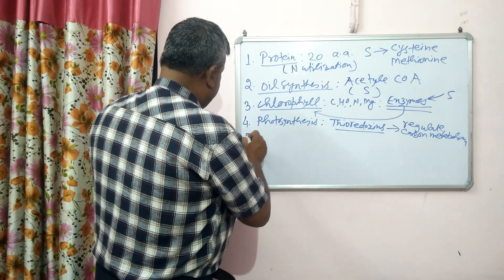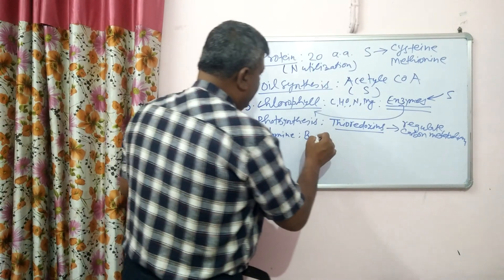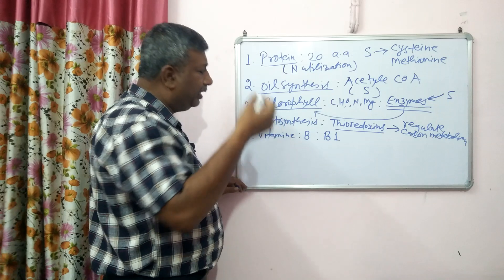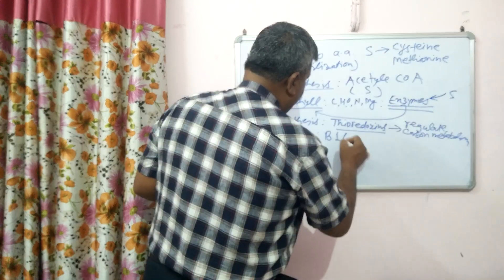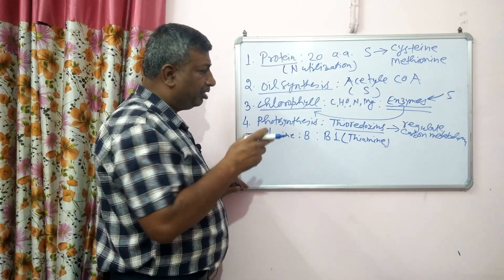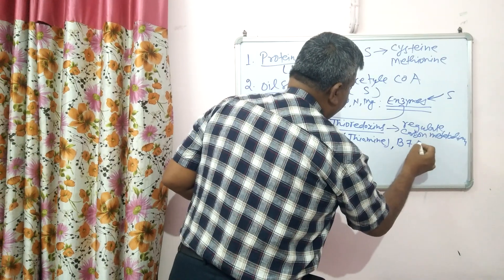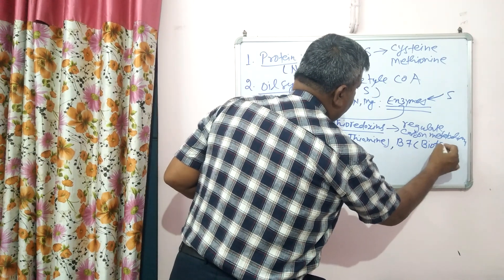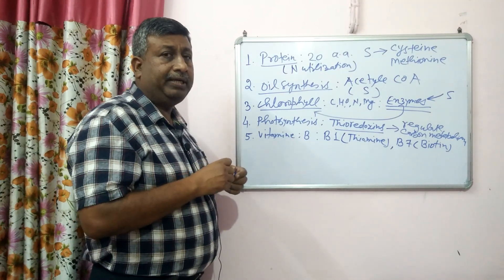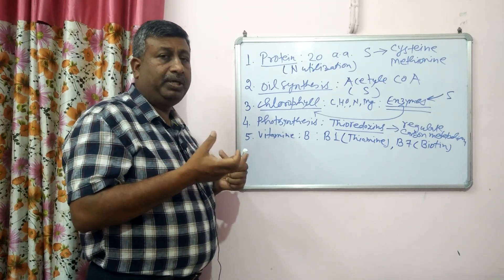The next function is sulfur's role in vitamin synthesis. Particularly vitamin B — vitamin B1, which is thiamine, directly involves sulfur in its structure. Without sulfur, vitamin B1 cannot be formed. Similarly, vitamin B7, known as biotin or vitamin H, also contains sulfur. So vitamin B1 and vitamin B7 are sulfur-containing vitamins, making vitamin synthesis another important role of sulfur in plants.